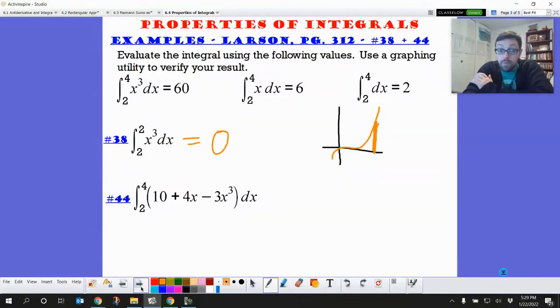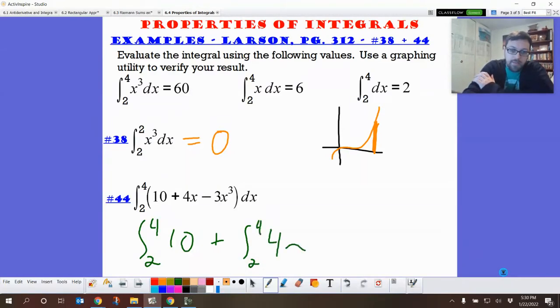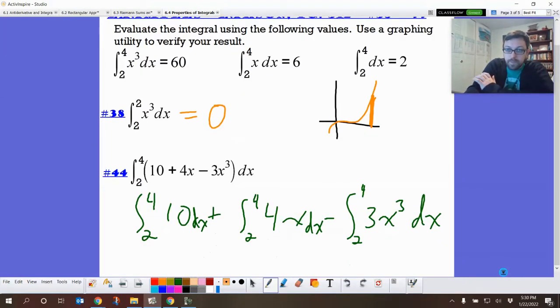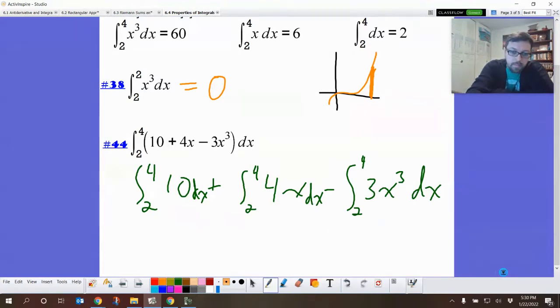Now, this one, from four to two, and we've got a whole bunch of things. Well, let's break it up. Because I don't know how to put those things together, so I'm going to break it up into separate integrals using that property that if you've got multiple functions, I've got this function of 10 plus this function of 4x and I've got a function of 3x cubed. 2 to 4, and then all of these should have dx. So this one has a 3 in front of it, so we can take that constant out, so we can make this 3 integral from 2 to 4 of x cubed dx. And the reason I wanted to do that is I know what x cubed is. It's 60. So this is just 3 times 60.